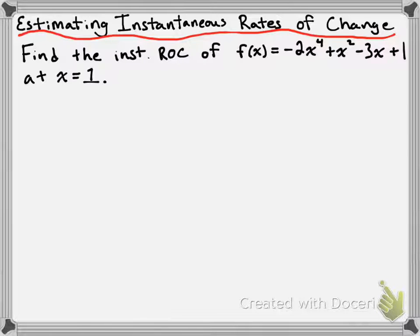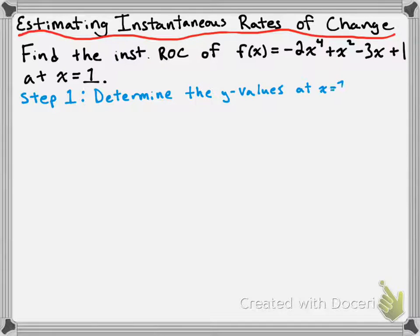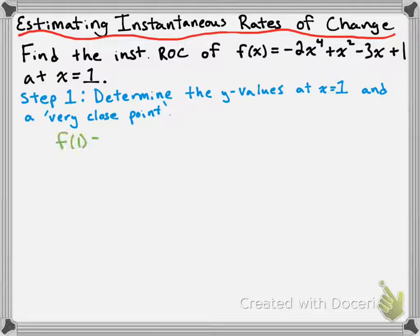We're going to separate this question into about two steps. The first step is going to be to determine the y values at x = 1 and a very close point. We'll talk about the very close point in a second, but let's just find the y value at x = 1, which involves finding f(1).